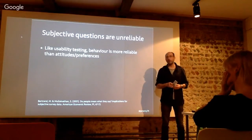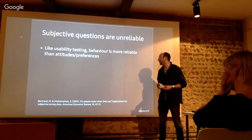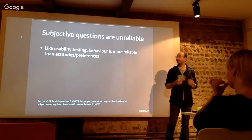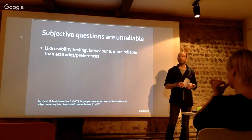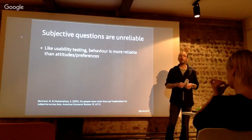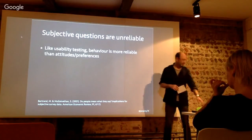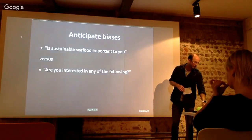Subjective questions are unreliable. A big meta-analysis of the literature basically says that if you ask people about attitudes and preferences, it produces really unreliable findings. So stick to questions about behavior and facts. That's kind of similar to what you're supposed to do with usability testing.